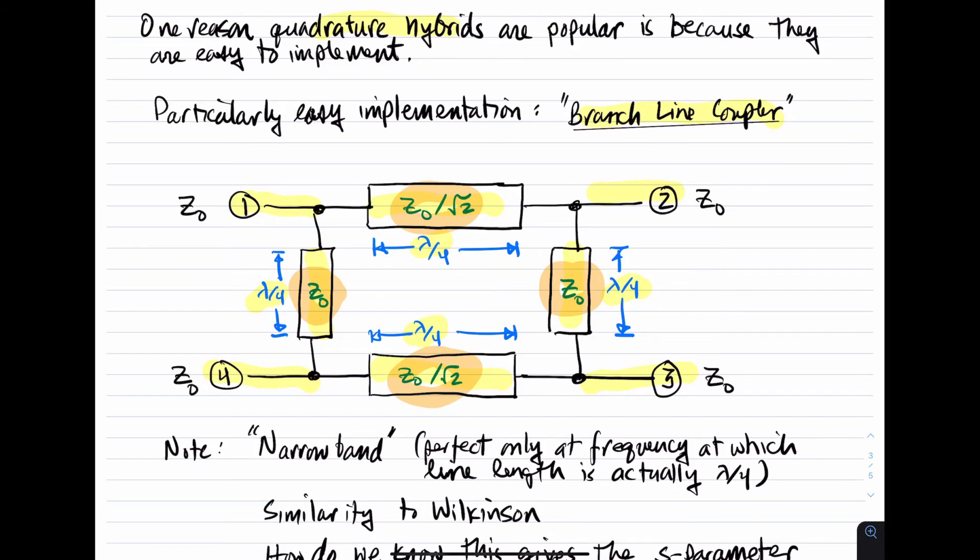So if you do this, you have these four sections of transmission lines with these lengths and these characteristic impedances, you have a branch line coupler. Now a couple things to note here. First, such an implementation is going to be narrowband. That is, it'll only be perfect at the frequency at which these line lengths are actually one-quarter wavelength. And away from that frequency, this will obviously not be exactly a quadrature hybrid. Nevertheless, they tend to have pretty broad bandwidth.